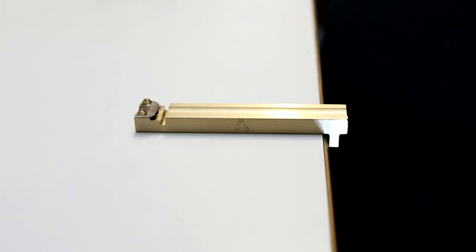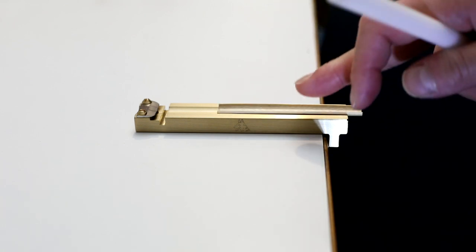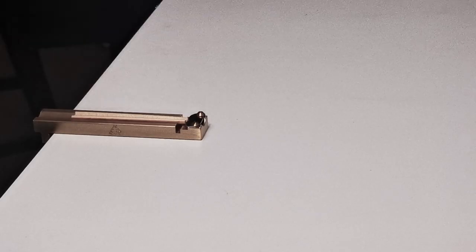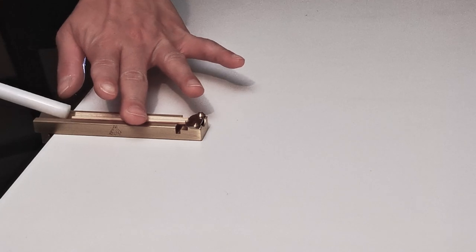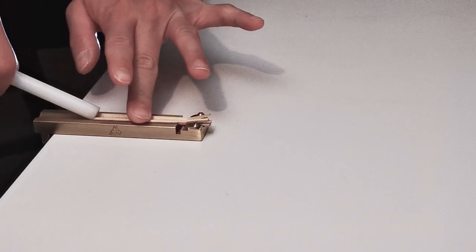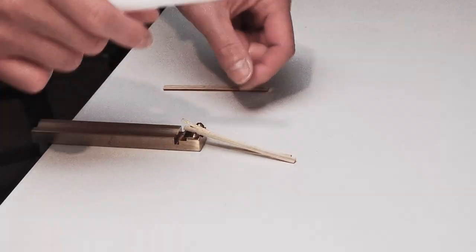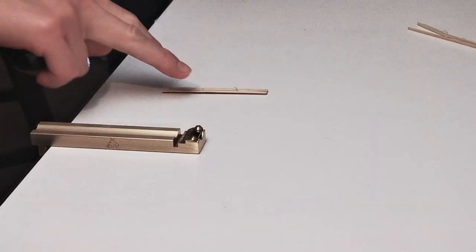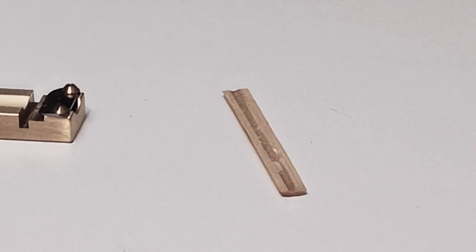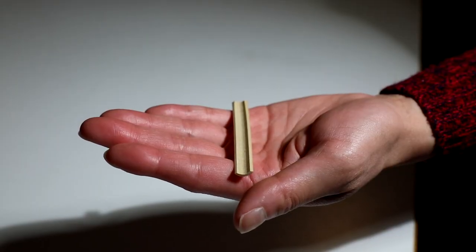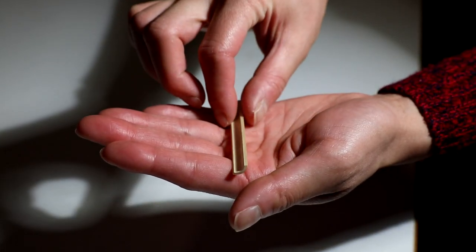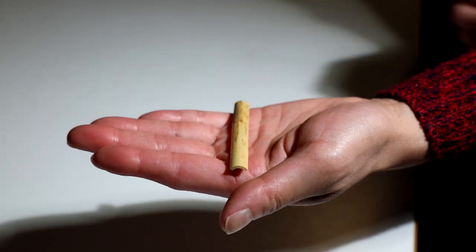The final step is to pre-gouge the cane. And this is the final pre-gouged piece of cane. You can see the rough curvature and thickness of it.